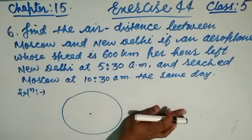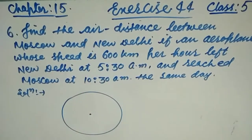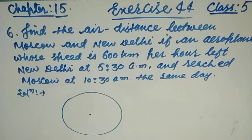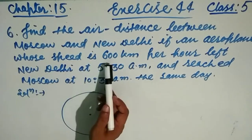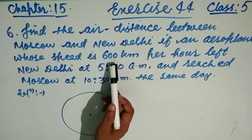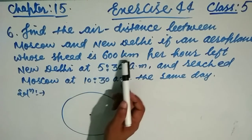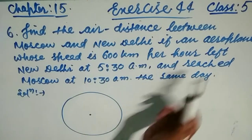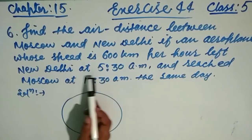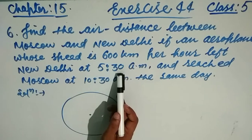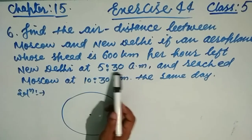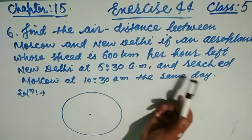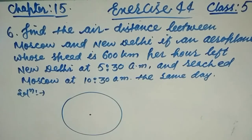Question number six: find the air distance between Moscow and New Delhi if an airplane whose speed is 600 kilometers per hour left New Delhi at 5:30 a.m. and reached Moscow at 10:30 a.m. the same day.